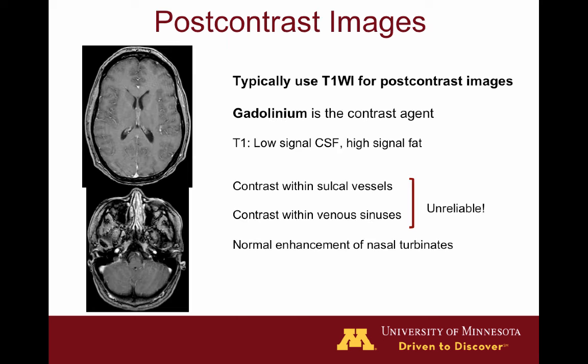For contrast-enhanced MRI, we typically use T1-weighted images and gadolinium as the contrast agent, as opposed to CT where iodine is the agent. Gadolinium is used because of its particular magnetic properties and the number of electrons in its outer shells. The presence of gadolinium causes local T1 shortening, which on a T1-weighted image shows up as brighter signal. Note that many vessels appearing bright is not a reliable sign of contrast; instead, look at the nose — mucosal enhancement in the nose is one of your best signs on a brain MRI that contrast has been used.